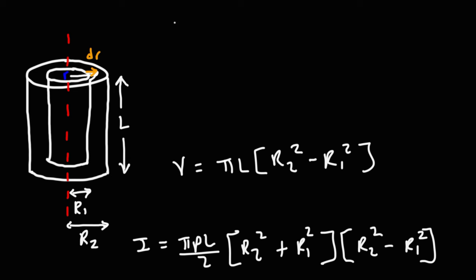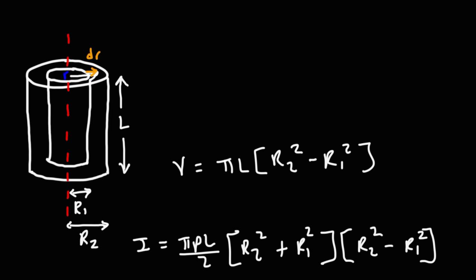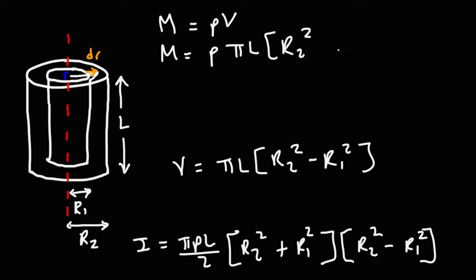We mentioned that density is mass over volume. Multiplying both sides by v, we know that mass M is density times volume. We have the volume of the hollow cylinder, so replacing v with π l times (r2 squared minus r1 squared), we get M equals ρ π l times (r2 squared minus r1 squared).